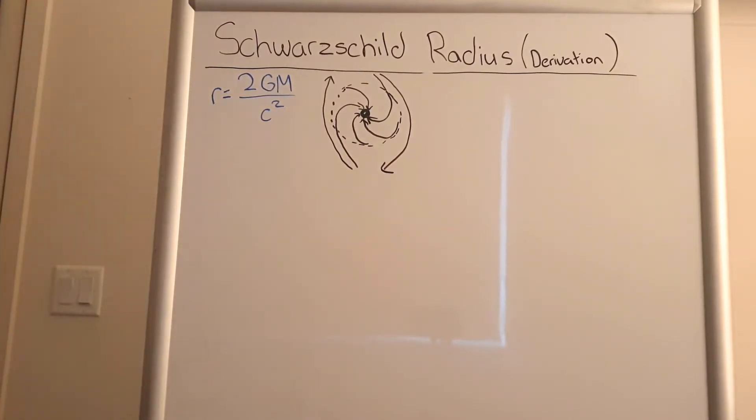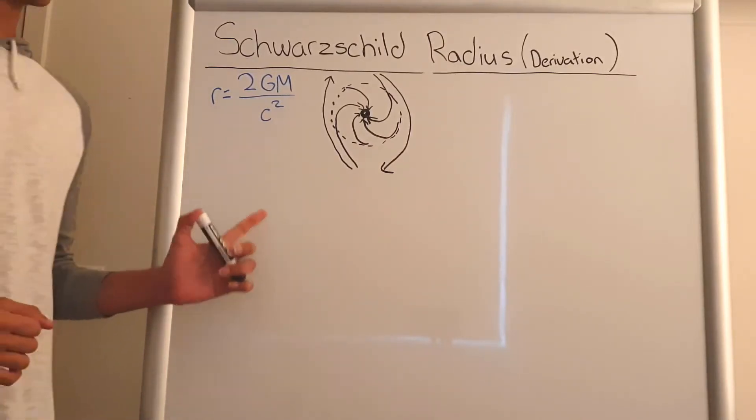And so that's essentially what the Schwarzschild radius is finding. It's finding how far out from the center of a black hole light can escape.